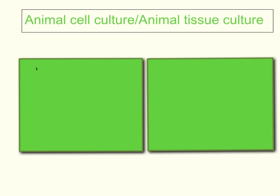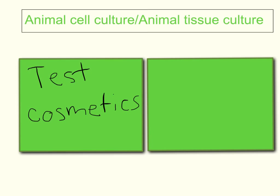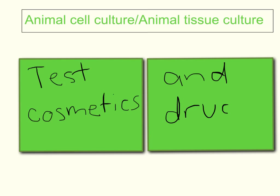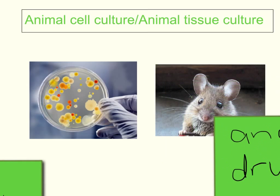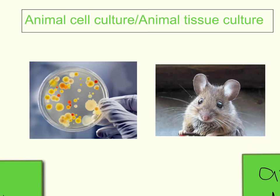One of the really worthwhile benefits of animal cell culture is that now we're able to test products and chemicals such as cosmetic products on our cell culture rather than on humans or on animals. That has certain advantages - the fact that we can test cosmetics and we can test medications and drugs. It's much more ethical for us to test our products on animal cell cultures, which are exactly the same as our cells, as opposed to testing them on animals, which a lot of people are going to have issues with.